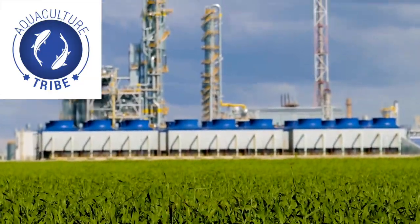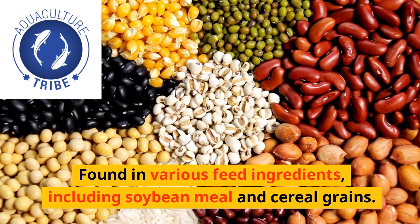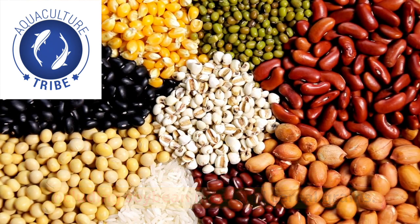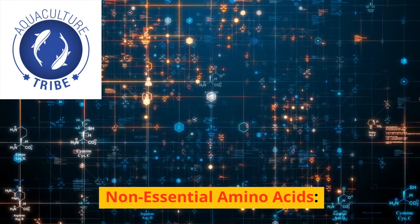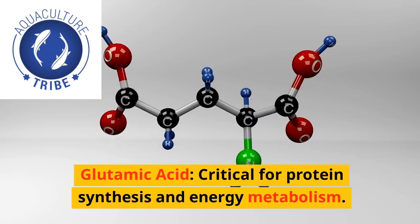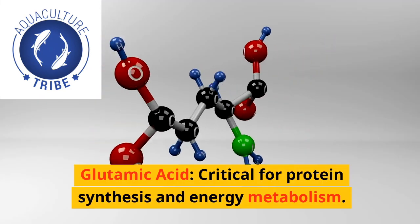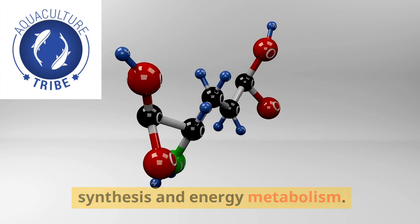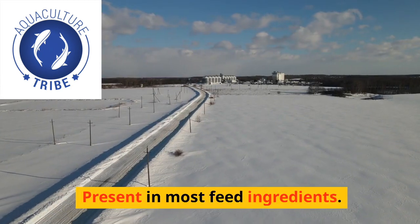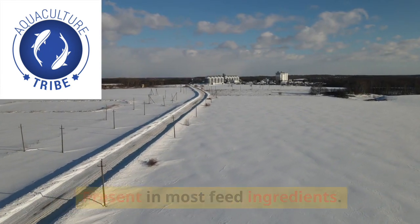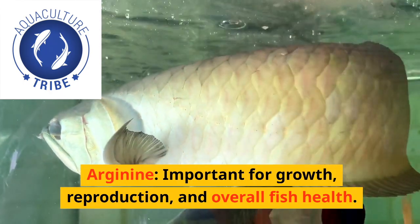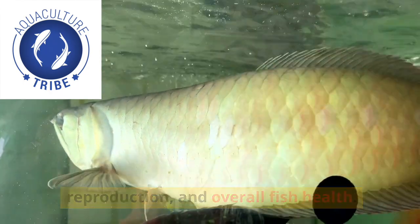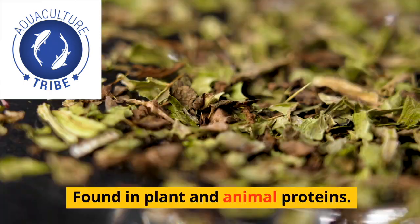Tryptophan is essential for growth and feed efficiency, found in various feed ingredients including soybean meal and cereal grains. Non-essential amino acids: glutamic acid is critical for protein synthesis and energy metabolism, present in most feed ingredients.